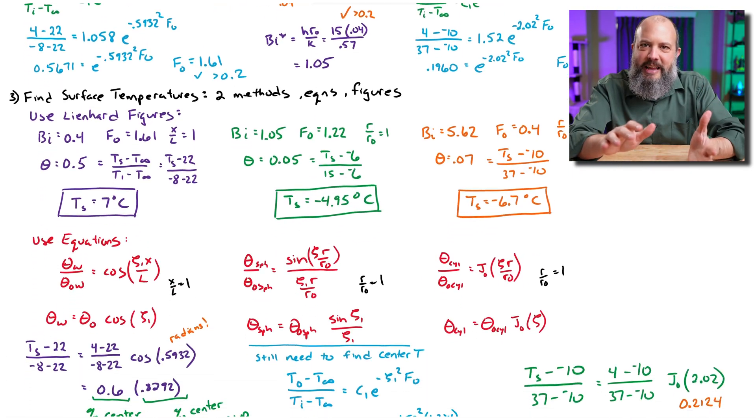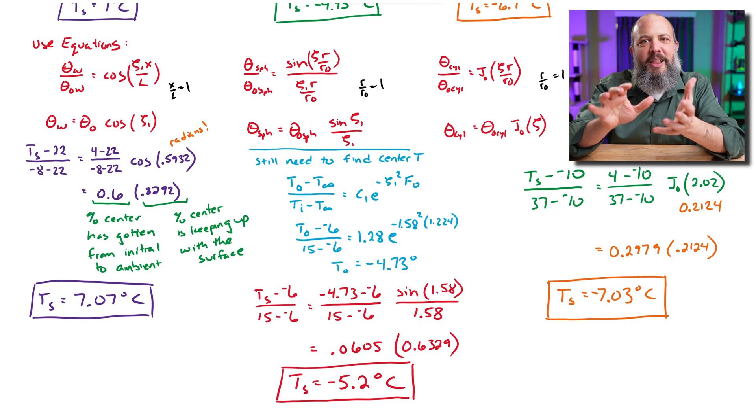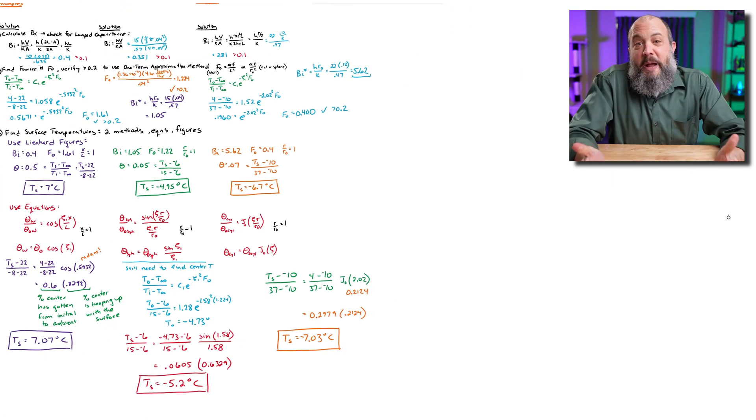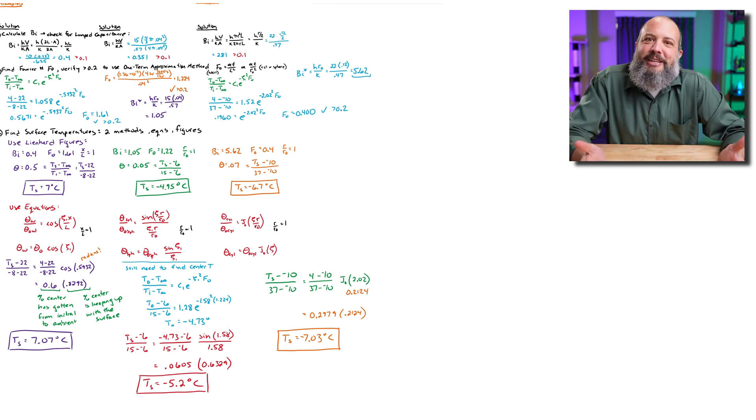For all three problems, the figures and equations gave pretty close answers. If you have access to the figures in the free Leinhardt textbook, that's good confirmation — go ahead and use them. There will be a little error from reading between lines on a plot, but compared to using a Bessel function, the figures may be a good choice. If this one-dimensional transient conduction problem has been a bit overwhelming and you want a simpler plug-and-chug problem to build muscle memory, click the video on screen for a much simpler, shorter, more straightforward problem.